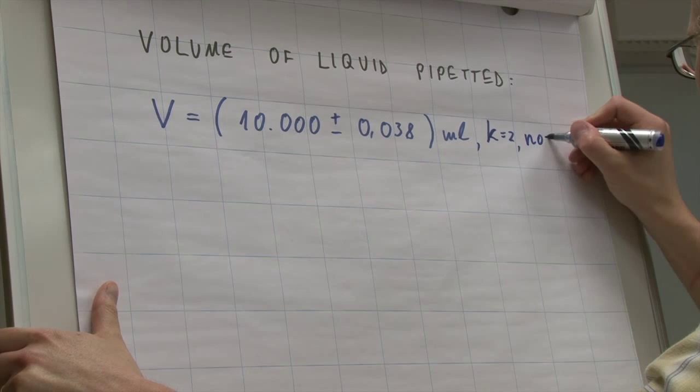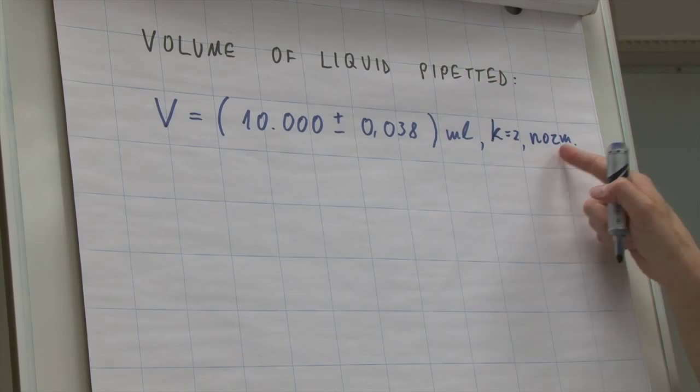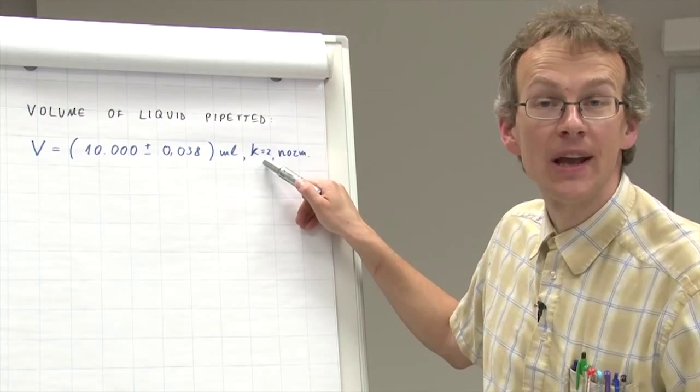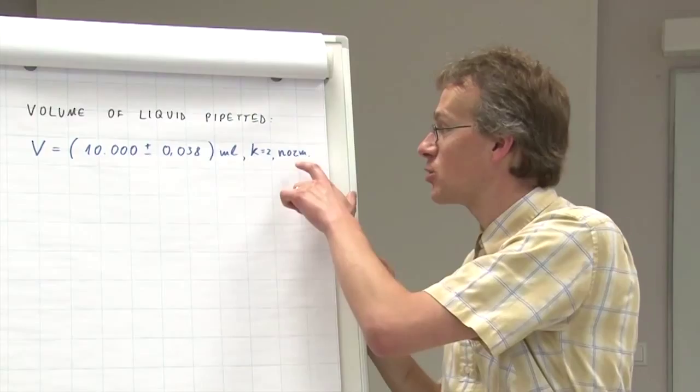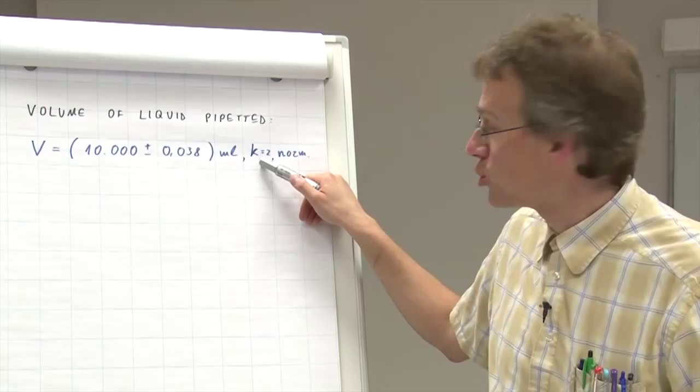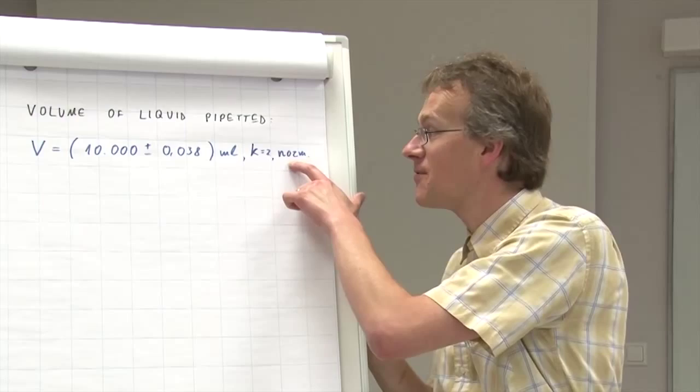And what does this mean? This means that we have calculated the combined standard uncertainty, multiplied it by the coverage factor 2, obtained this expanded uncertainty, and it means that we have a reason to expect that our measurement obeys the normal distribution.